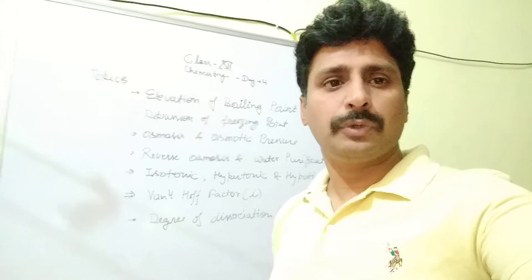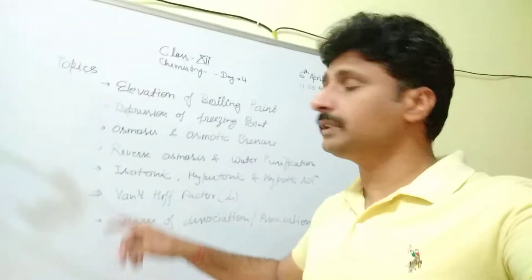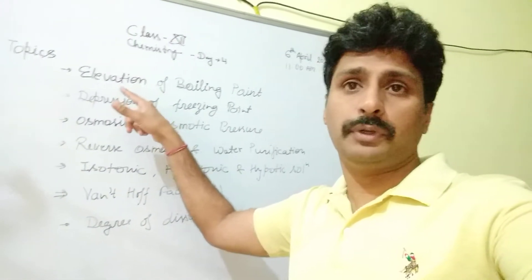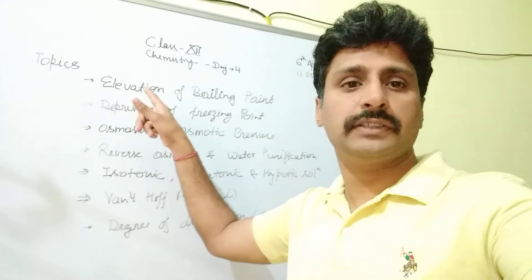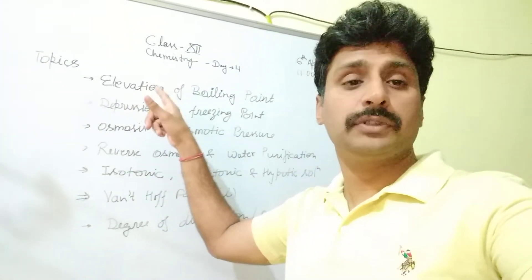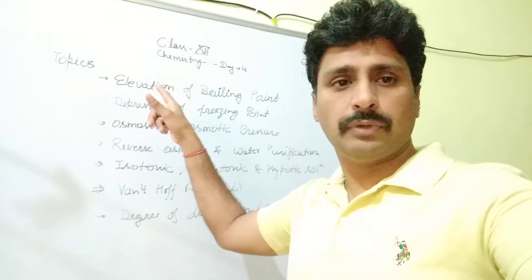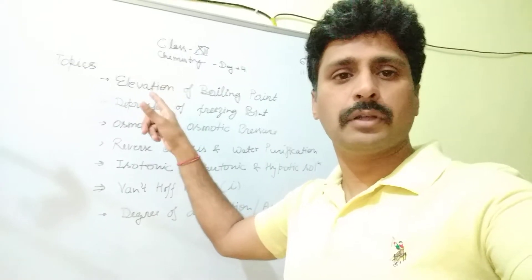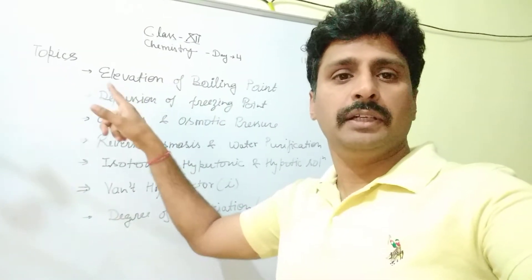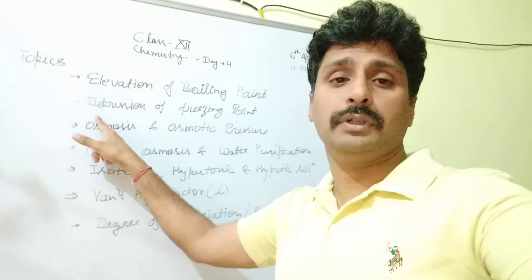The topics of today's classes are: the first one is elevation of boiling point. Yesterday we discussed that it is a colligative property. By using this property we can also calculate the molar mass of solute. The next colligative property is depression of freezing point.